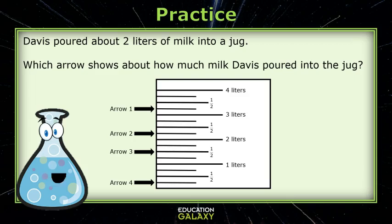In this problem, we're trying to find the arrow that is closest to two liters. So here's two liters. The arrow closest to it would be this one, arrow two.